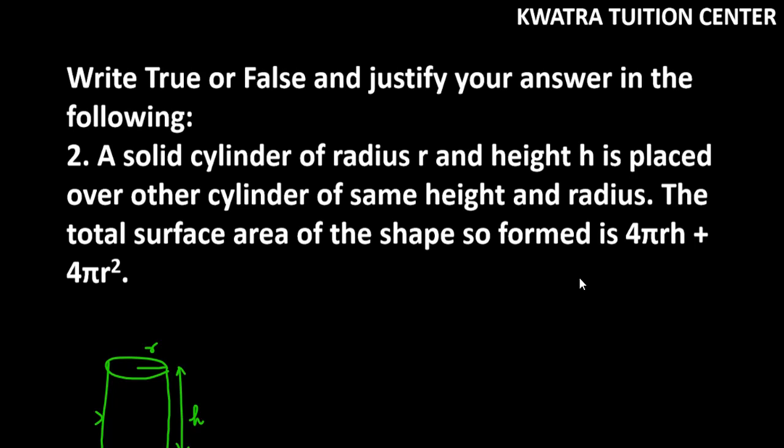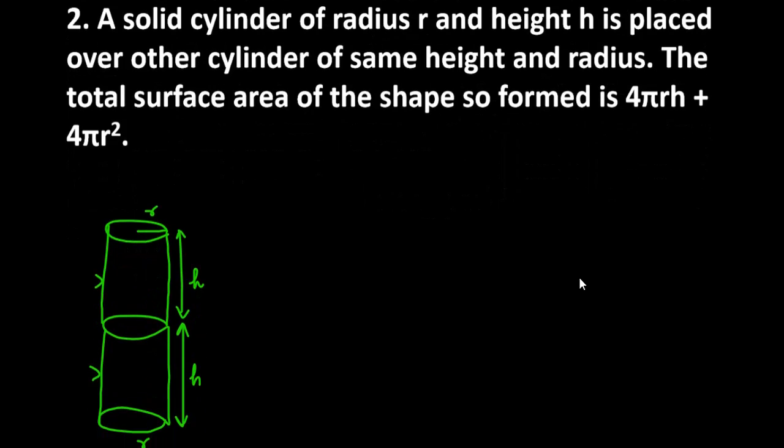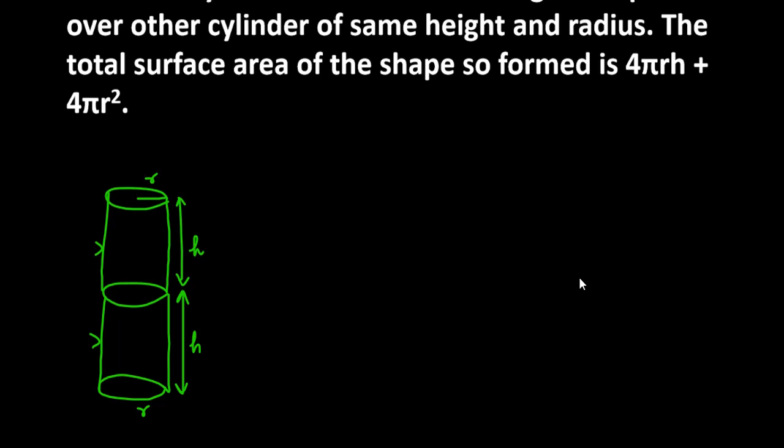So there is a solid cylinder, and we have put another solid cylinder on it — same height, same radius. So the figure will be like this. You can see here on the left side: we have two cylinders placed over one another. They said the surface area should be 4πrh plus 4πr².